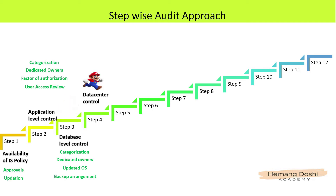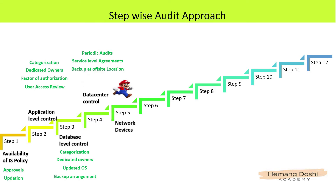Step 4 is about auditing the controls related to the data center. As an auditor, you need to check whether data centers are audited at periodic intervals, whether a service level agreement is available for an externally hosted data center, and whether the secondary data center is hosted at an off-site location. We will discuss how to audit and validate this control in our Step 4 video.